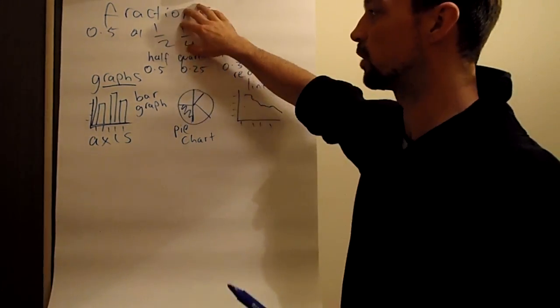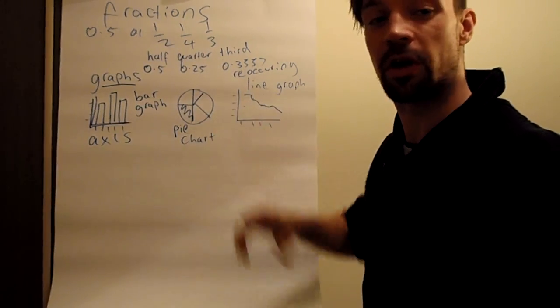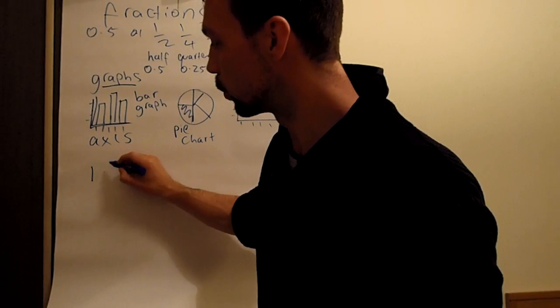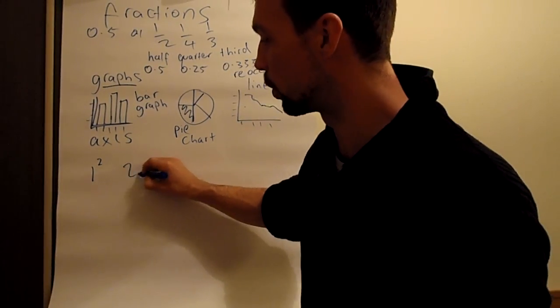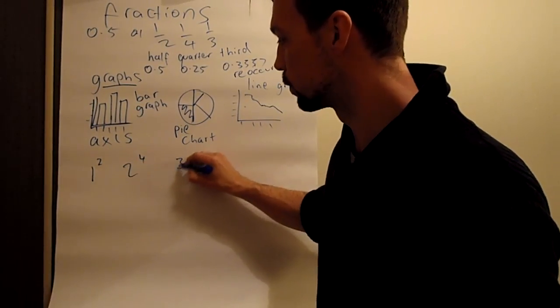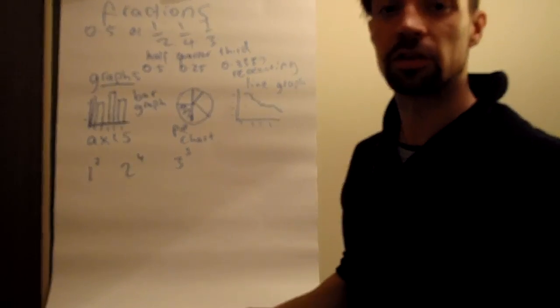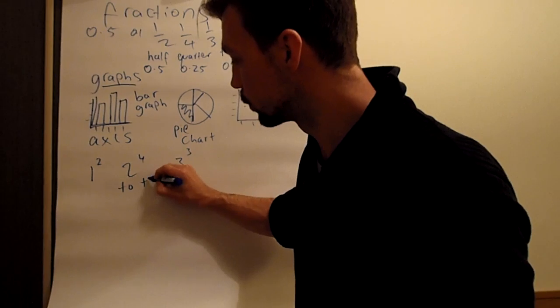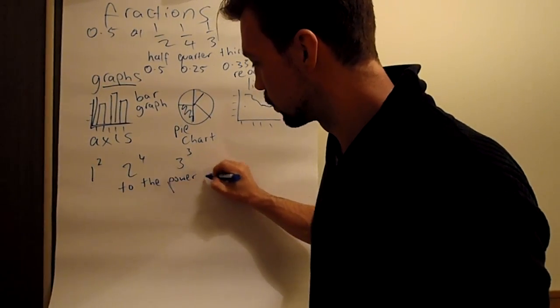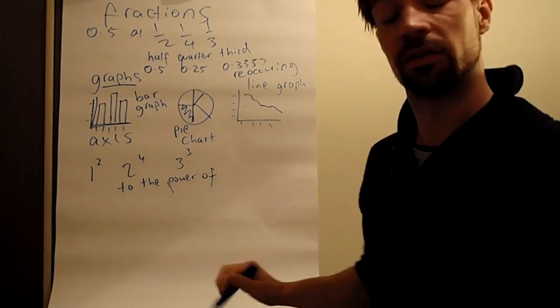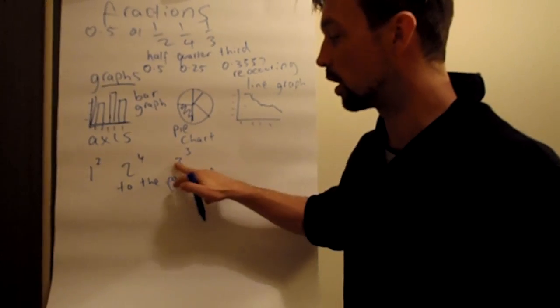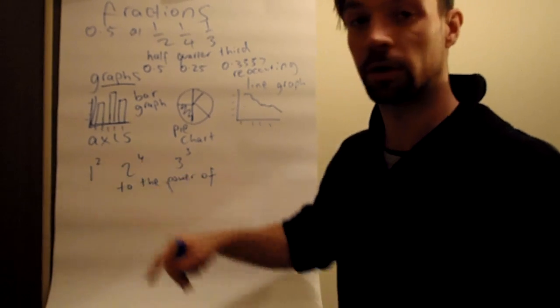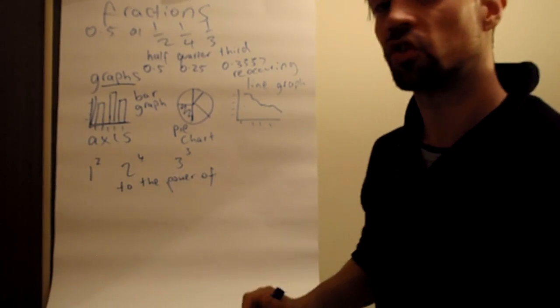So we have some fractions, we have three types of graphs. The next one is when you see numbers with smaller little numbers at the top. And these are called to the power of. And this means how many times the large number is times by itself. So one to the power of two, or it's also squared.